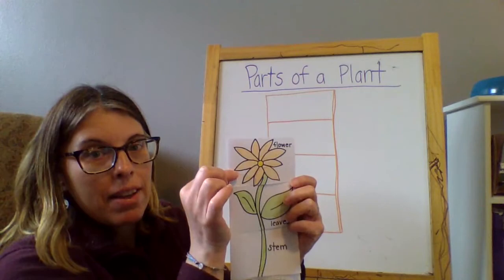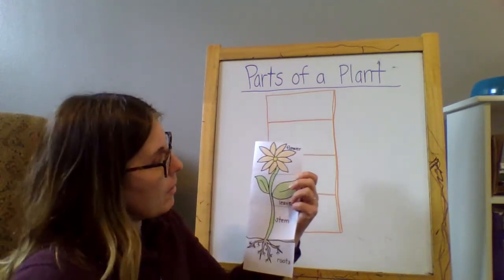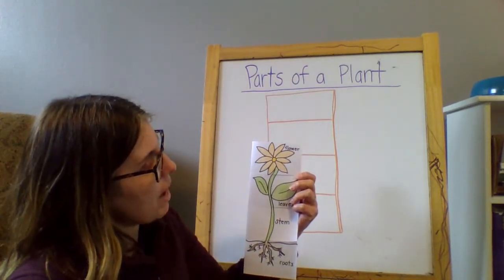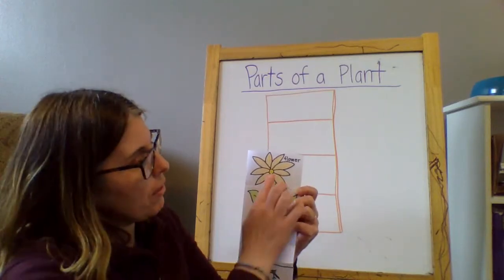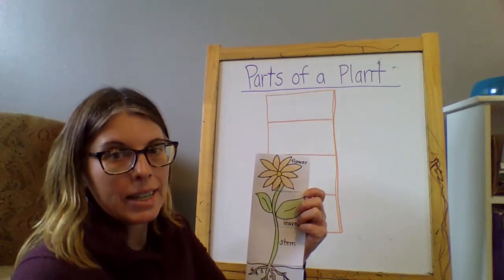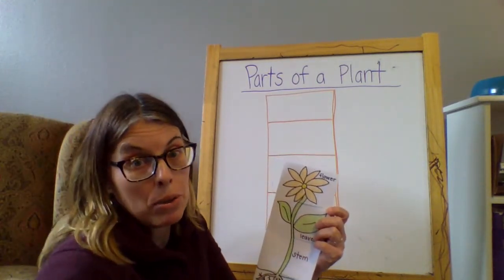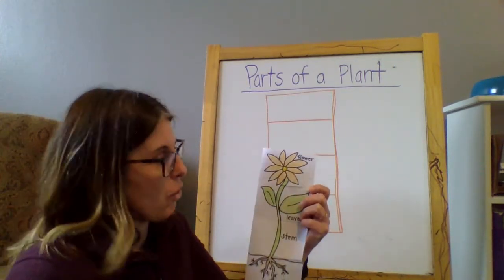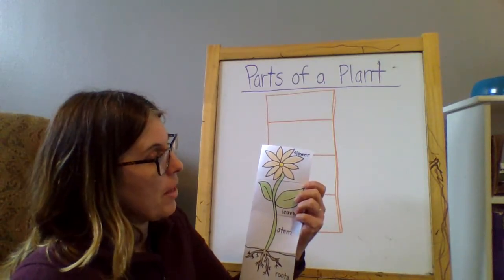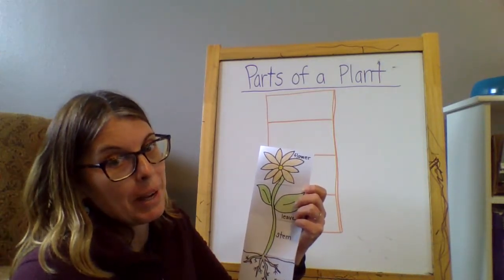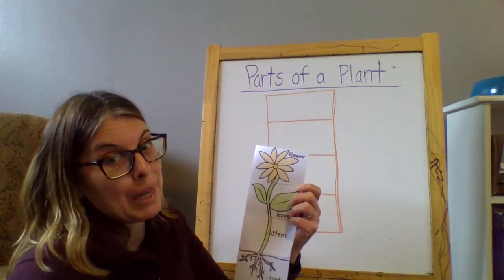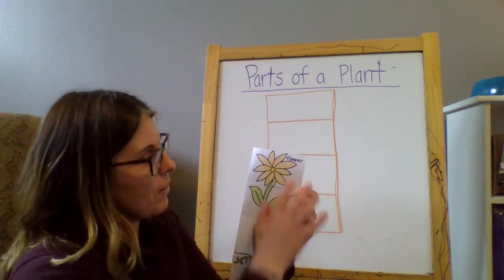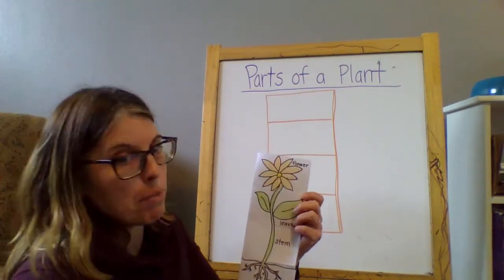And then further up we have the flower. And the flower has a couple of different jobs. So the flower makes the seeds, which enables the plant to reproduce and make more plants. But also the flowers are brightly colored and attractive and they help attract pollinators to the plant. So like bees or hummingbirds, different things that would pollinate the plants. So the flowers help attract those.